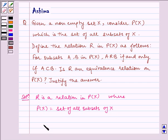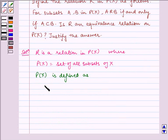P(X) is defined as: A R B if and only if A is contained in B, for A, B subsets of X.